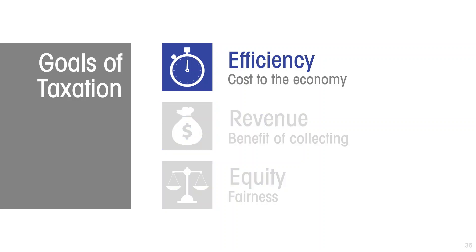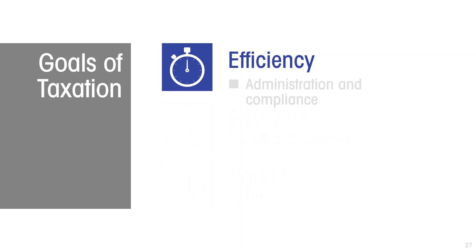There are two components to efficiency. The first one is the cost of administration and compliance. We'll come to structural distortion later on.